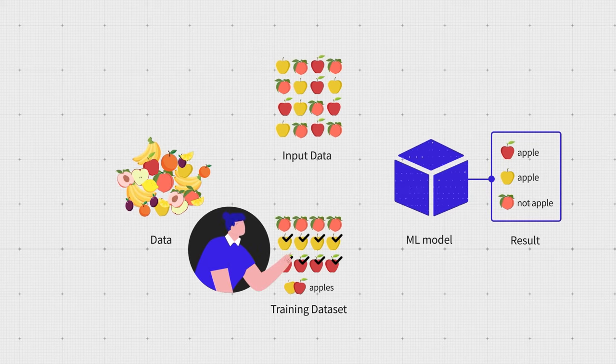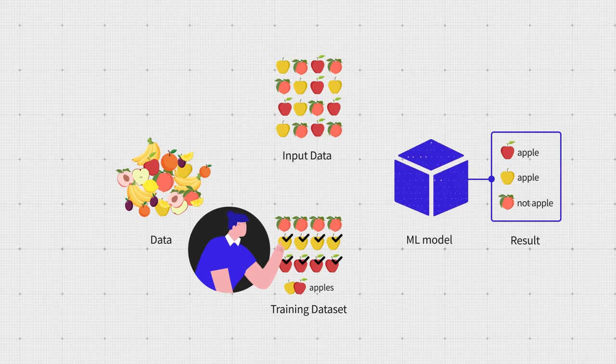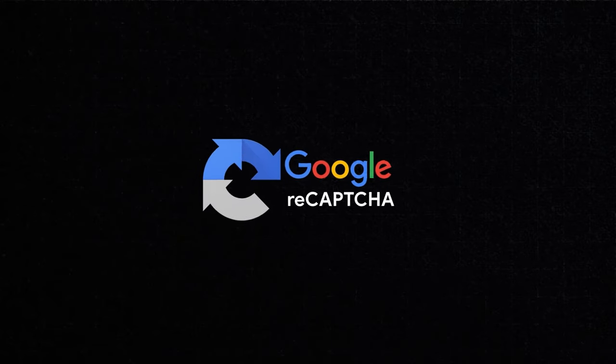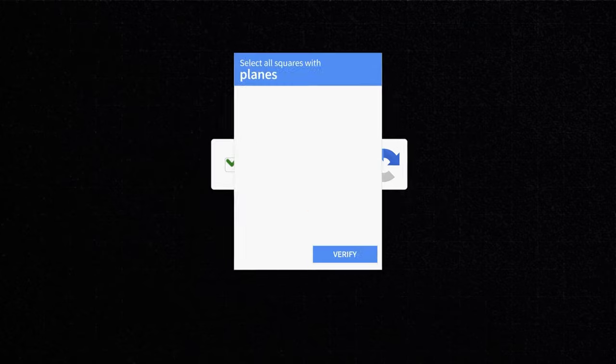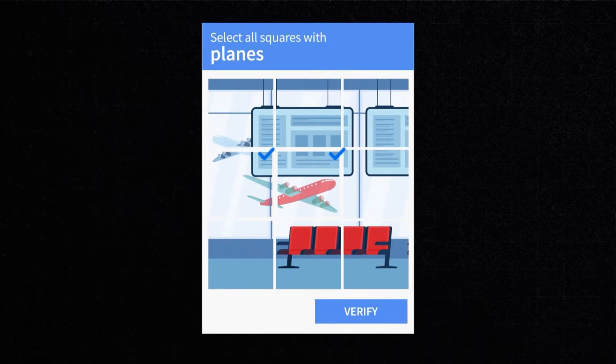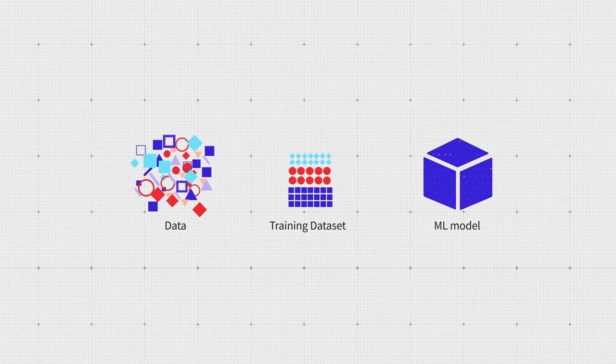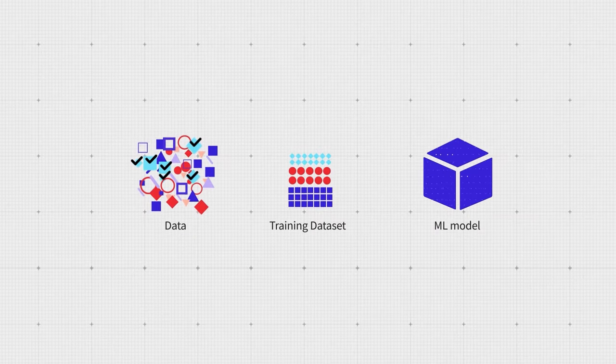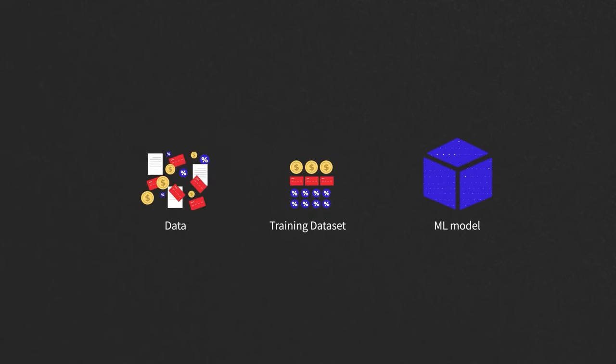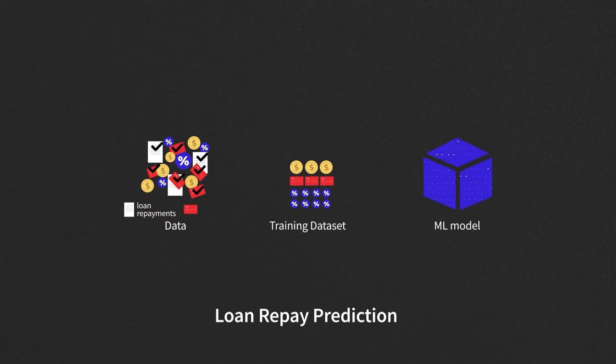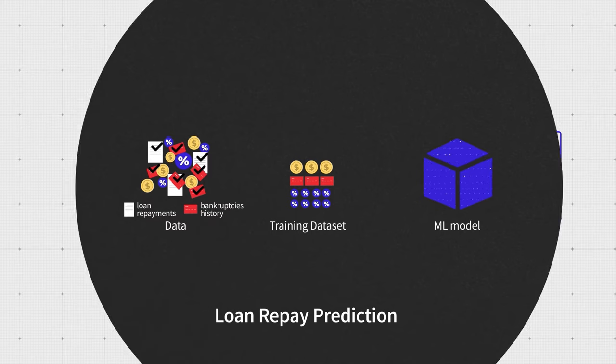When it comes to images, humans must label them manually for the machine to learn from. Of course, there are some tricks, like what Google does with their reCAPTCHA. Yeah, just so you know, you've been helping Google build its database for years, every time you proved you weren't a robot. But labels can be already available in data. For instance, if you're building a model to predict whether a person is going to repay a loan, you'd have the loan repayments and bankruptcy's history.